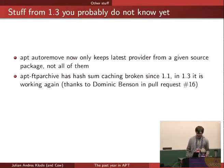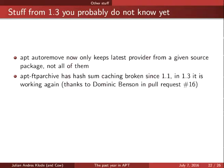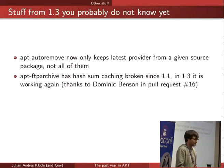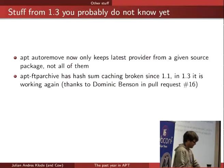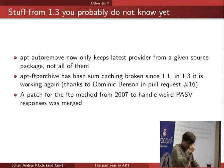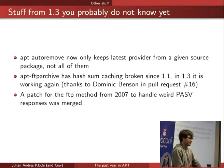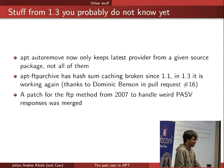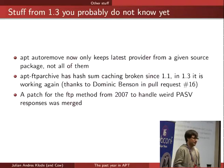You might have noticed apt-ftparchive was really slow. That was because the hash sum caching was broken in 1.1, but in 1.3 it's fixed again thanks to a pull request on our GitHub mirror, so it's now usable for larger things again. I also merged a patch for the FTP method that was lying around in the BTS since 2007 — it applied cleanly because nobody takes care of the FTP method anymore. The patch was about passive mode FTP servers returning responses we did not expect.